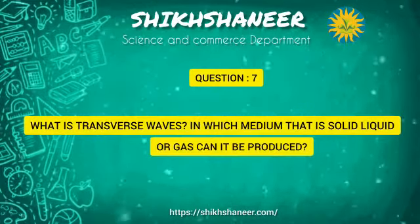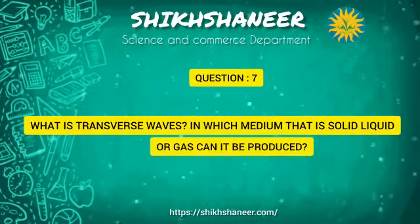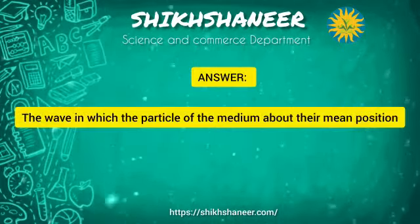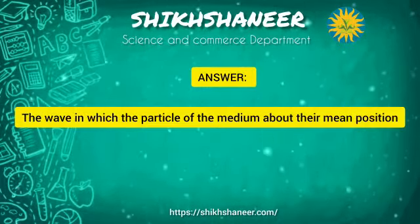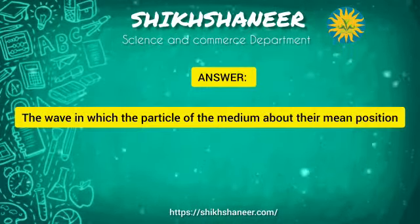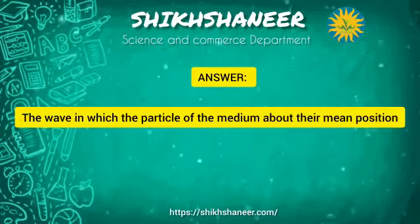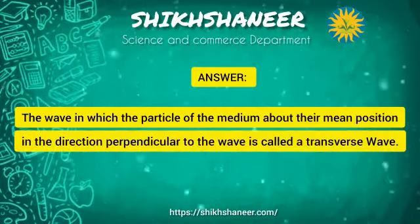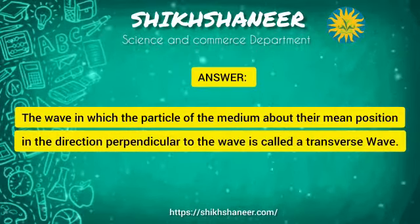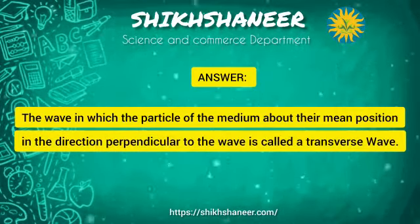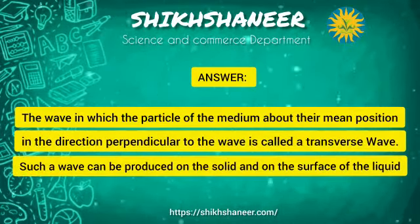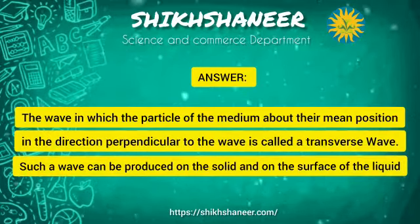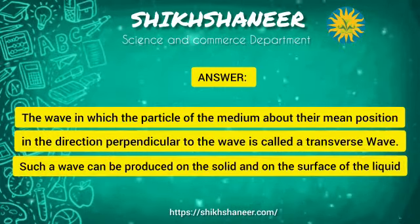What is a transverse wave, and in which medium — solid, liquid, or gas — can it be produced? A transverse wave is one in which the particles of the medium vibrate about their mean position in the direction perpendicular to the wave. Such a wave can be produced in solids and on the surface of liquids.